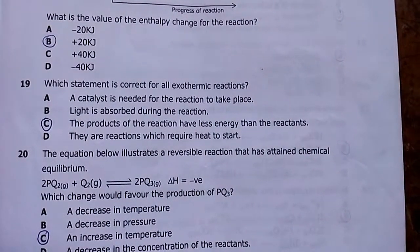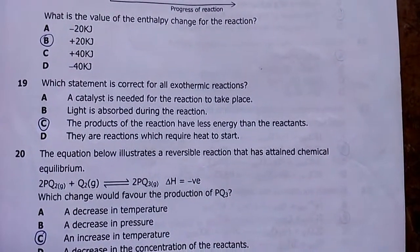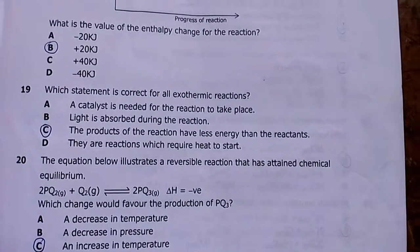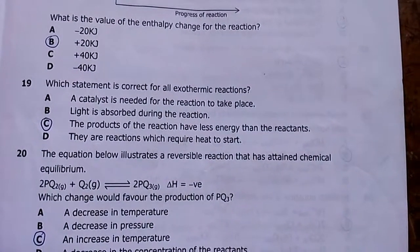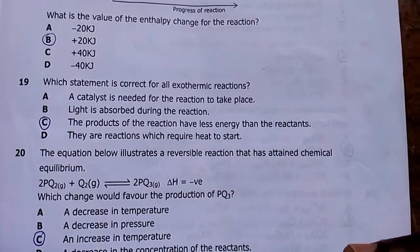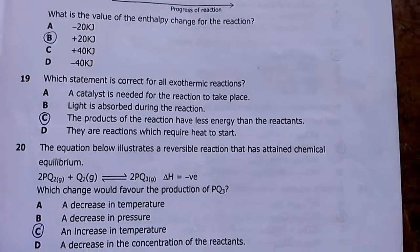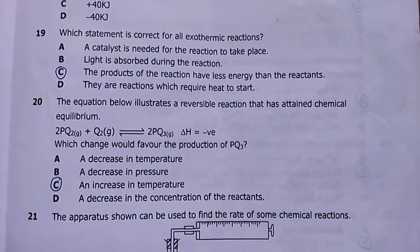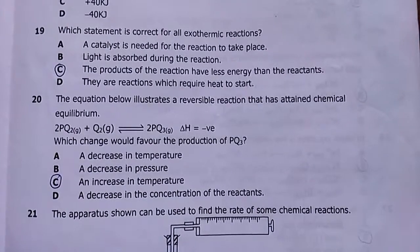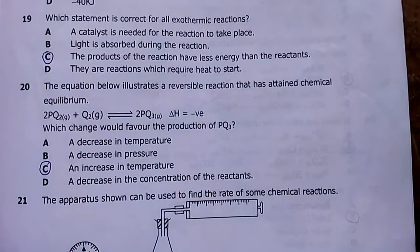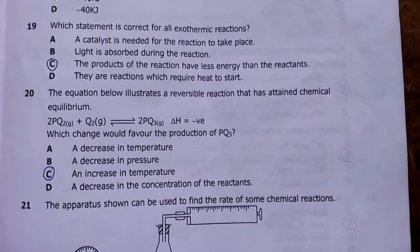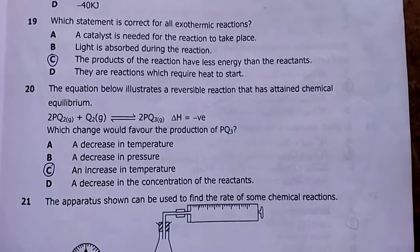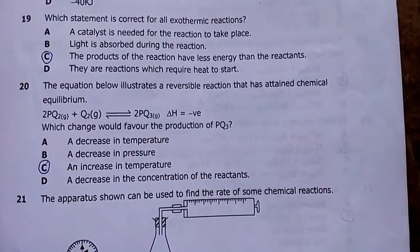Number nineteen: which statement is correct for all exothermic reactions? My answer is C — the products of the reaction have less energy than the reactants. In exothermic reactions energy is lost, giving a negative enthalpy value, so products have lower energy content than reactants.